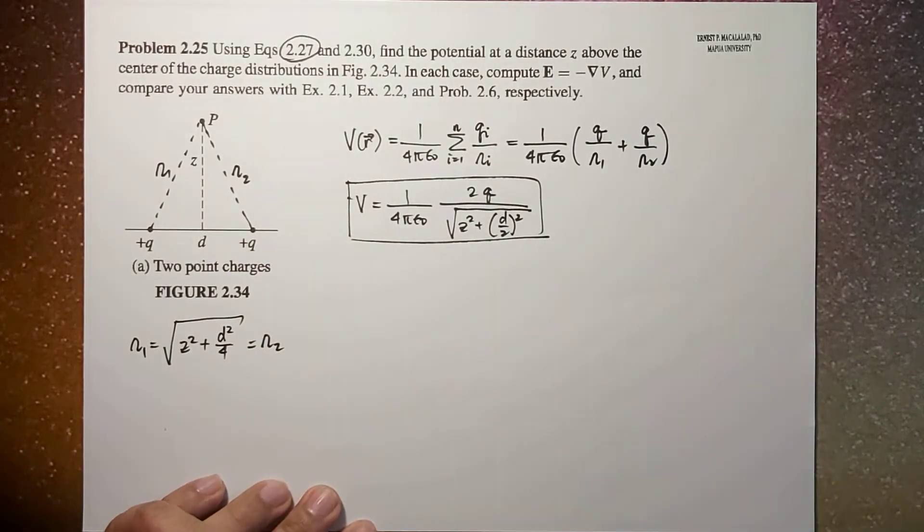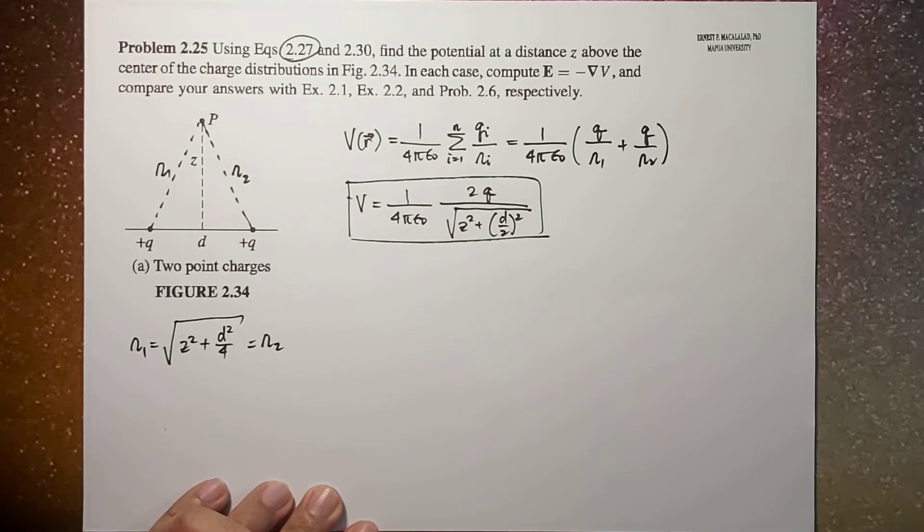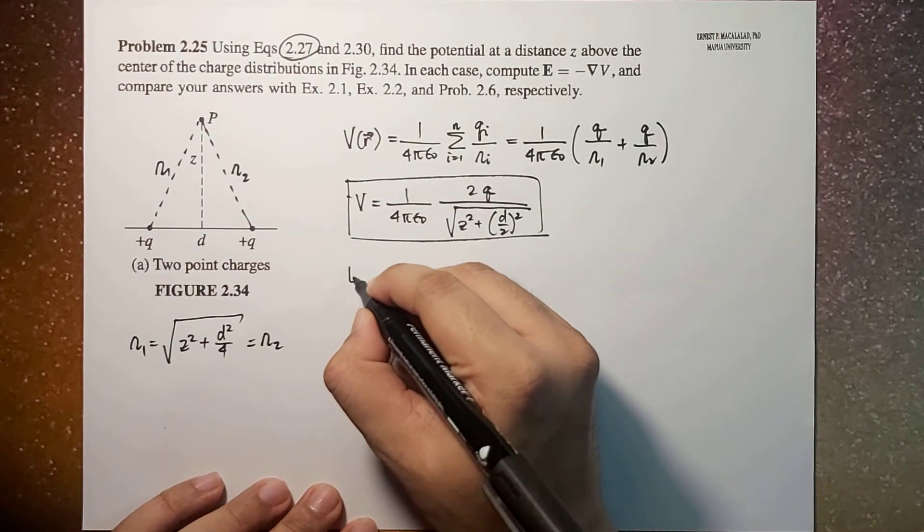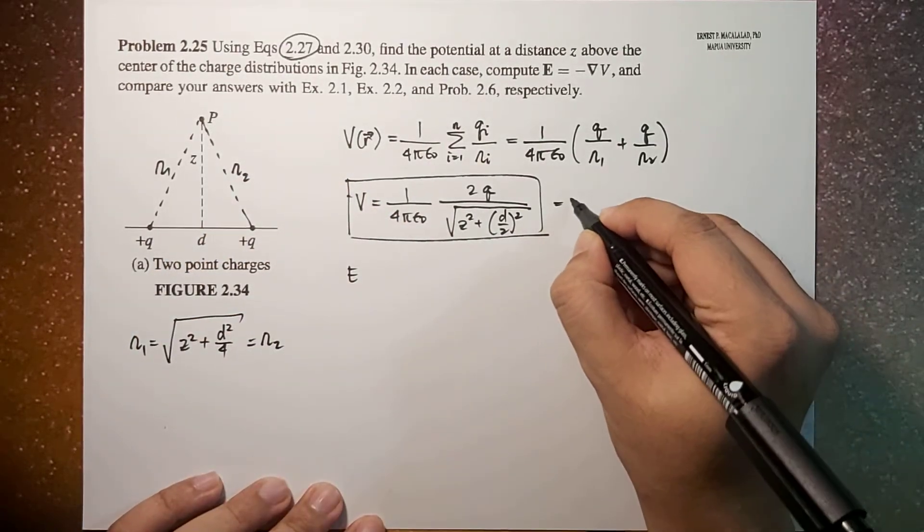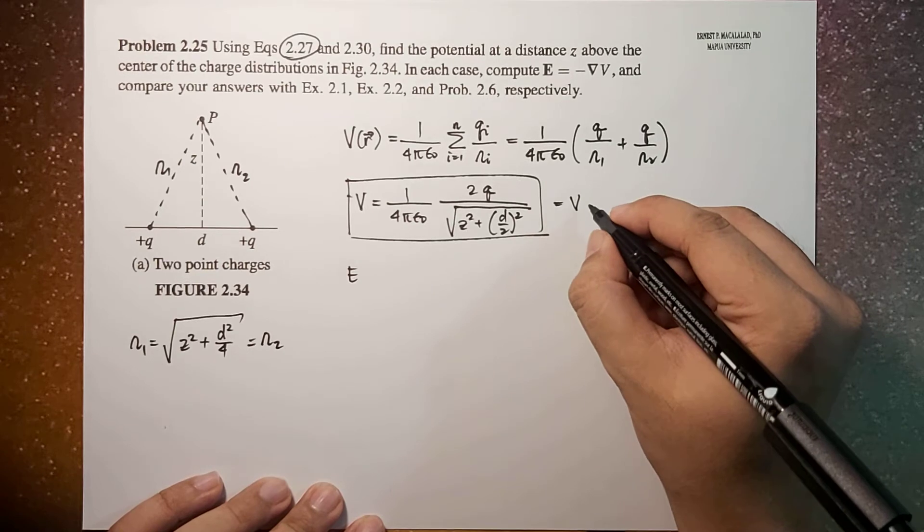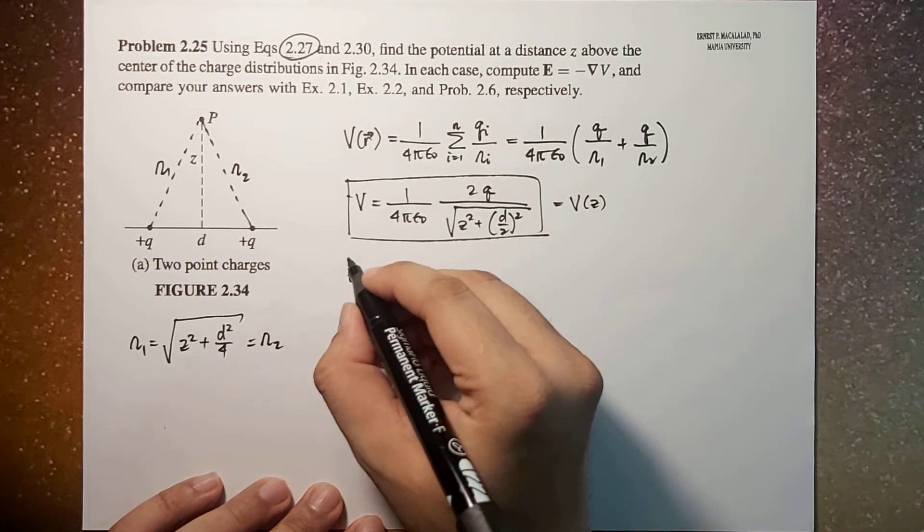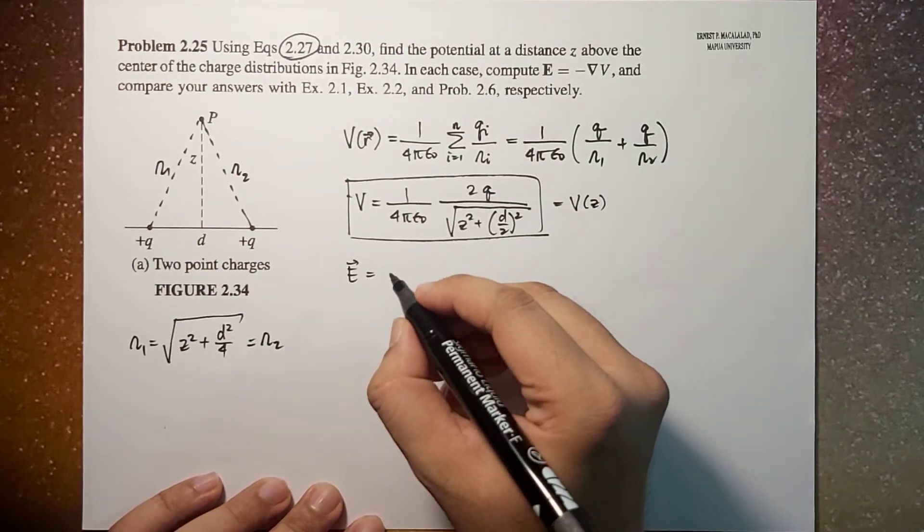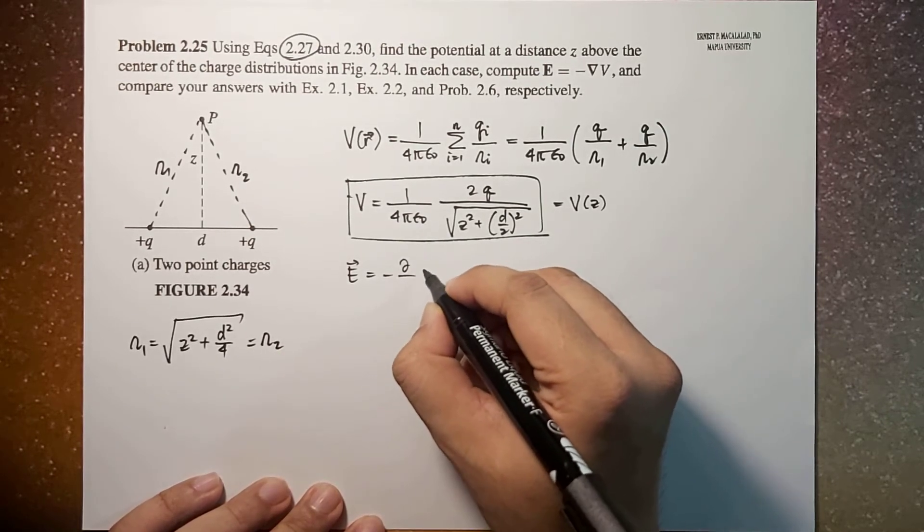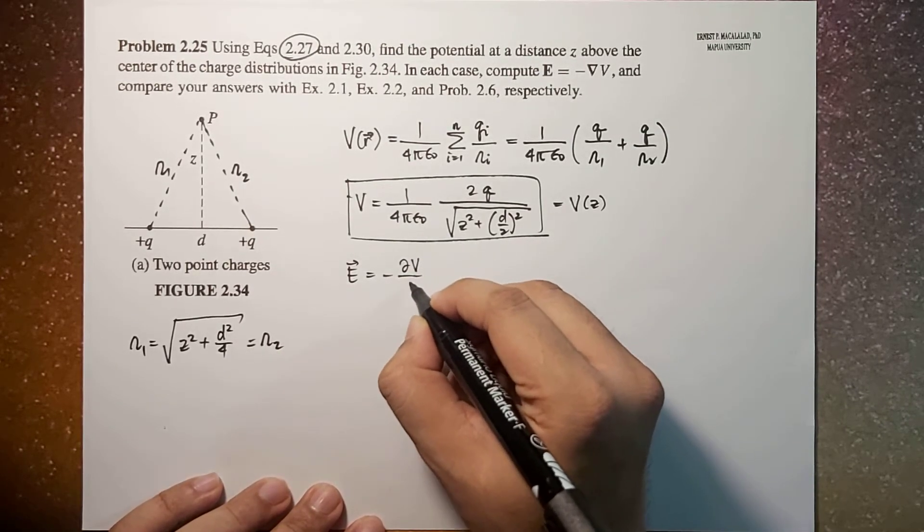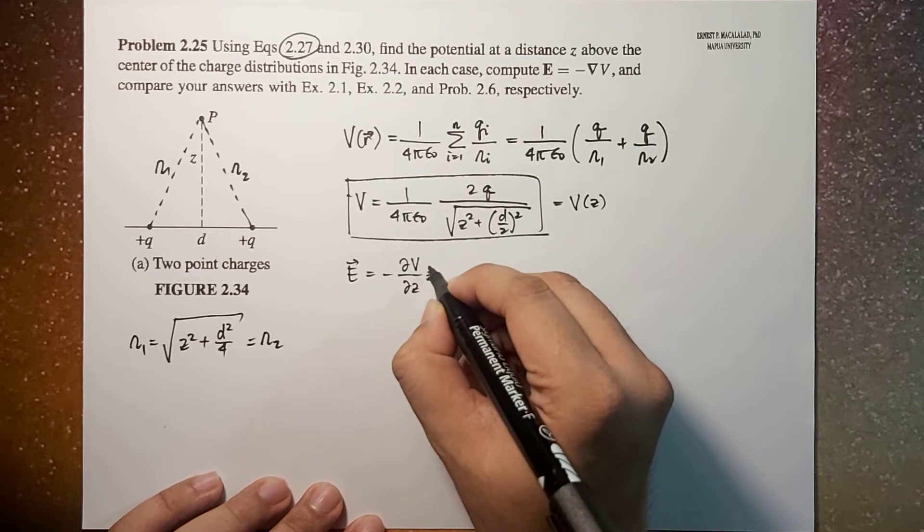Now let's verify if this is the case. Electric field - remember, this is in Cartesian coordinate system. So this is a function of Z. So the electric field will now be equal to negative derivative of V as a function of Z, Z hat.